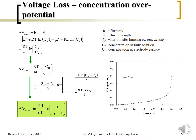The voltage loss due to concentration overpotential, when plotted as a function of current density, behaves as follows: at low current density when i is small, there is not much change. But as the current approaches the limiting current, the cell voltage loss increases sharply. This sharp increase near the limiting current is the characteristic behavior of the concentration overpotential.